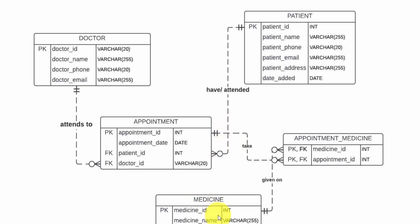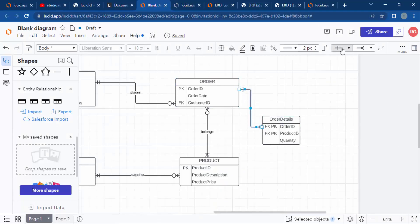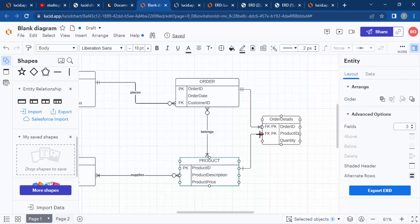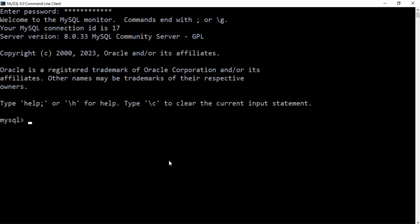The medicine table stores information about the medicines prescribed at the clinic, and the appointment_medicine table stores the relationship between appointments and medicines. This is a linking table because there is a many-to-many relationship between these tables. I have a video explaining the many-to-many relationship and how to break it down — I'll leave the link in the description. Now let's write some actual SQL code with our MySQL environment ready.